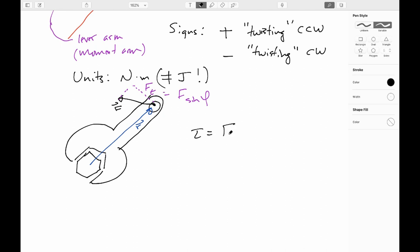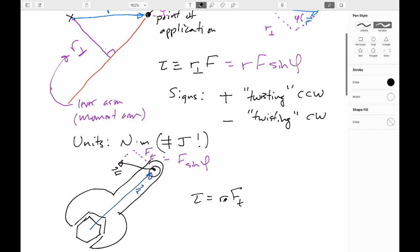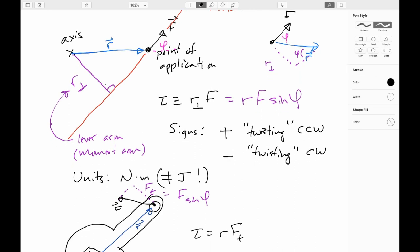So we could also write our torque equally usefully as R without a perpendicular times F tangential. So sometimes it'll be easier to think about just the straight distance here to here and then think about the bit of the force that's tangential right at that point rather than finding R perpendicular. So either you find R perpendicular and use all of F, or you use R and you find F tangential. Or you can just keep R and F as long as you find the angle. These are the three ways that you can write a torque.